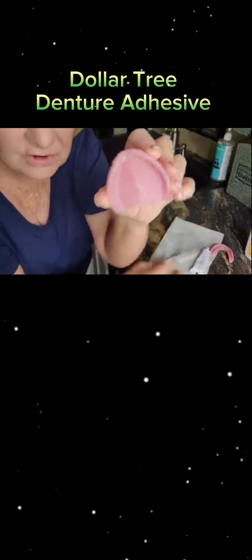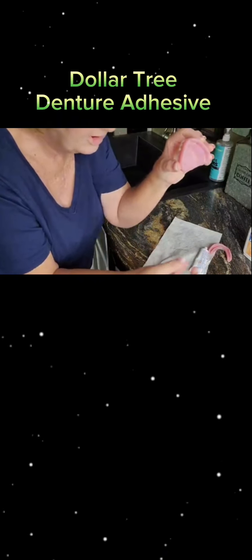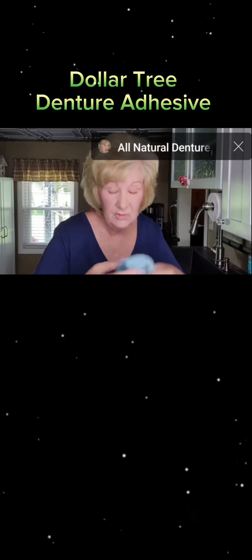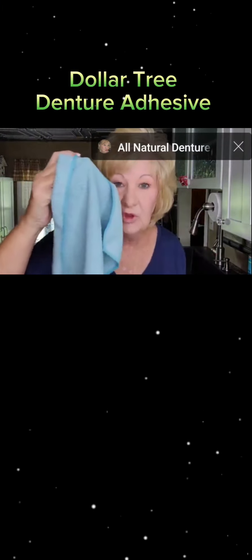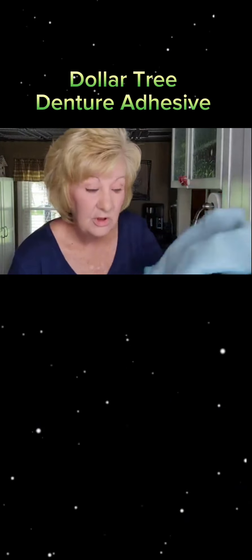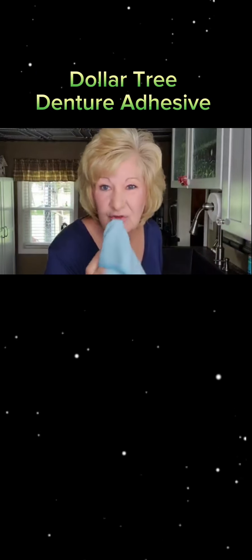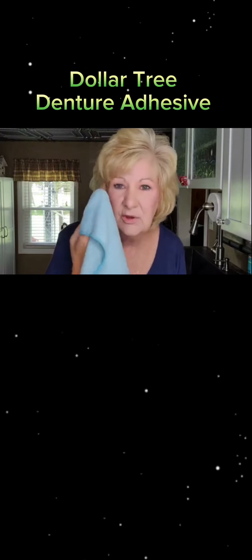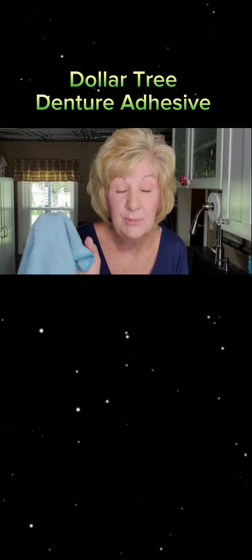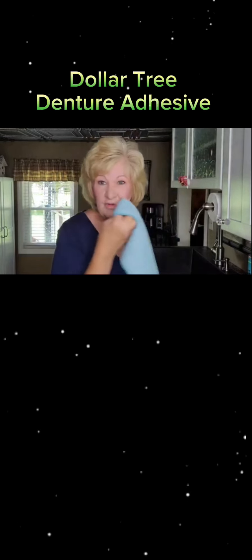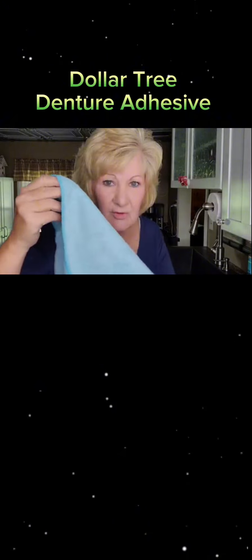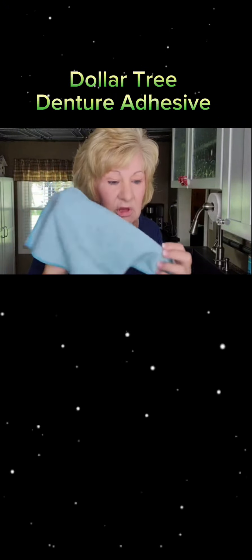Also, to get your denture adhesive out at night off your gums, when you take your dentures out, this is a dry microfiber cloth. Rob picked these up for me at an auto parts store. I just take this because when you use a paper towel and try to get it out, all you do is have a slimy mess and it's gross. Just take this, rub your gums and stuff. This will soak up the saliva that's in your mouth and won't make it slimy, and you can get your denture adhesive off easily.